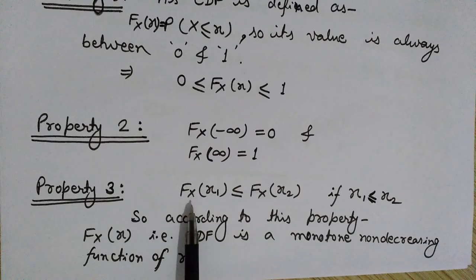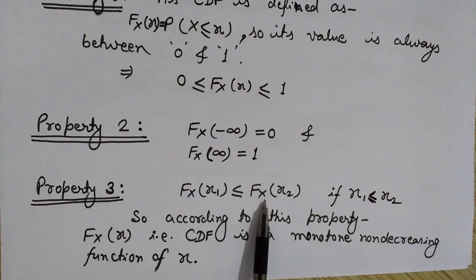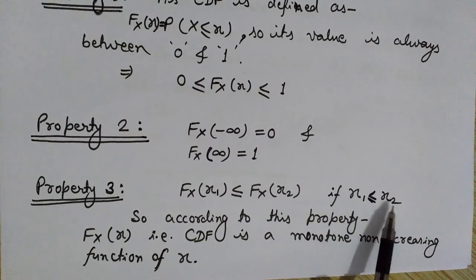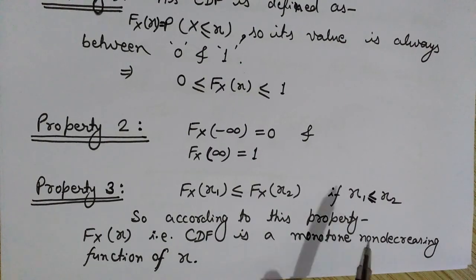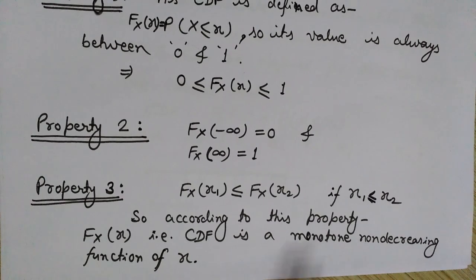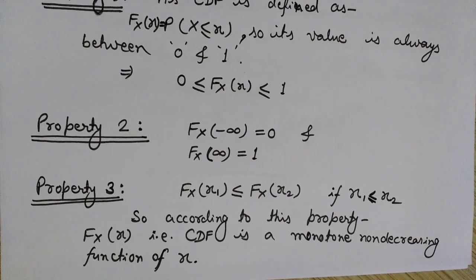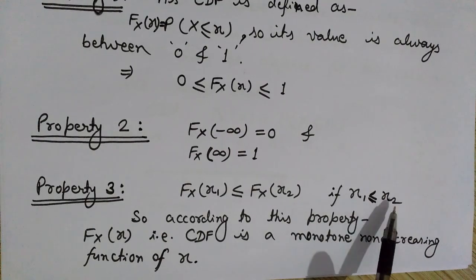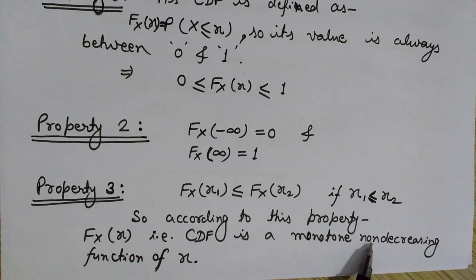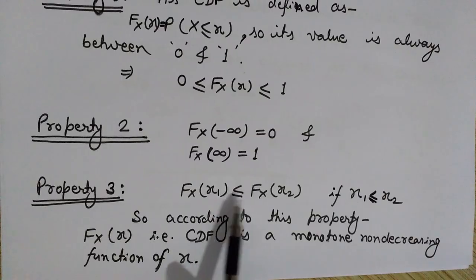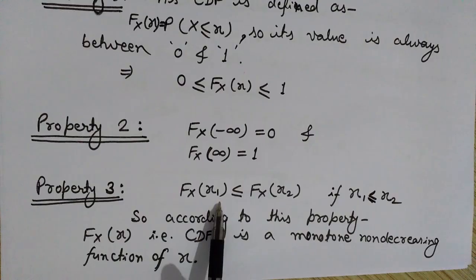Property three states that F(x1) ≤ F(x2) if x1 ≤ x2. This implies that the CDF is a monotone non-decreasing function of x, because whenever a function is non-decreasing, as the independent variable increases, the dependent variable also increases or stays the same. So if x1 is smaller than x2, then F(x1) would also be smaller than or equal to F(x2).